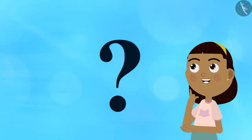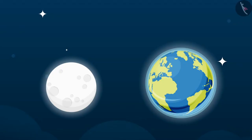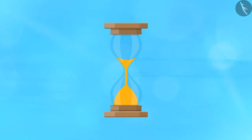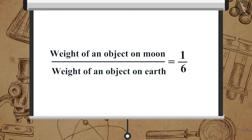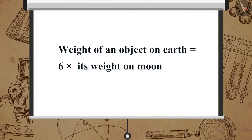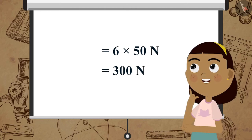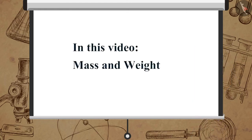Now let us solve a problem together. The weight of an object on the moon is 50 Newton — how much will the object weigh on the earth? Pause the video and make your calculations. Since weight on moon / weight on earth = 1/6, the weight on earth = 6 × weight on moon = 6 × 50 Newton = 300 Newton.